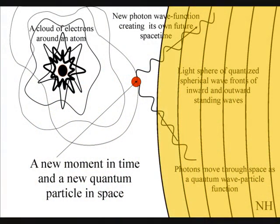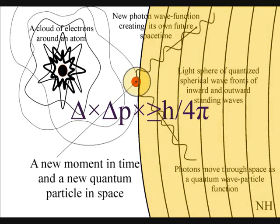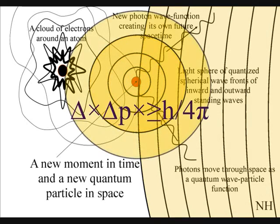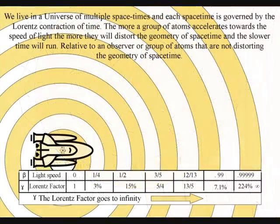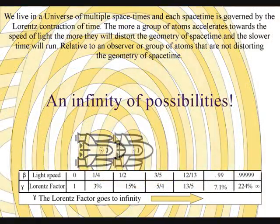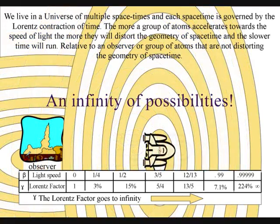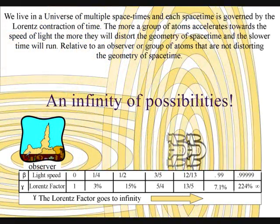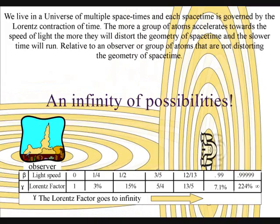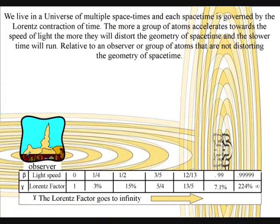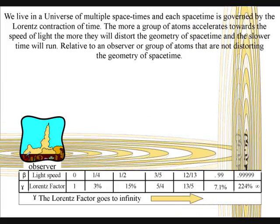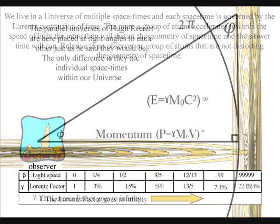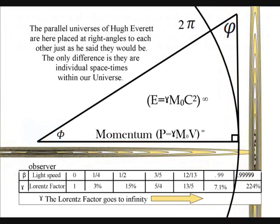Photon energy cascades down, forming greater degrees of freedom for the flow of entropy. We have an infinite number of reference frames within our universe, and because light has momentum and momentum is frame dependent, each object or observer will have their own reference frame with their own future uncertainty as time unfolds photon by photon.